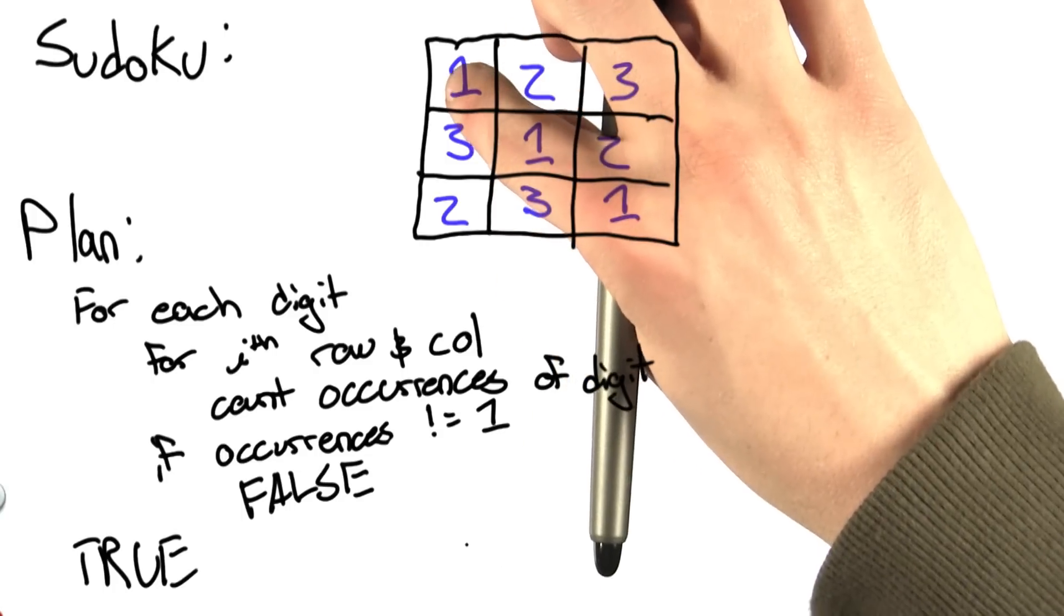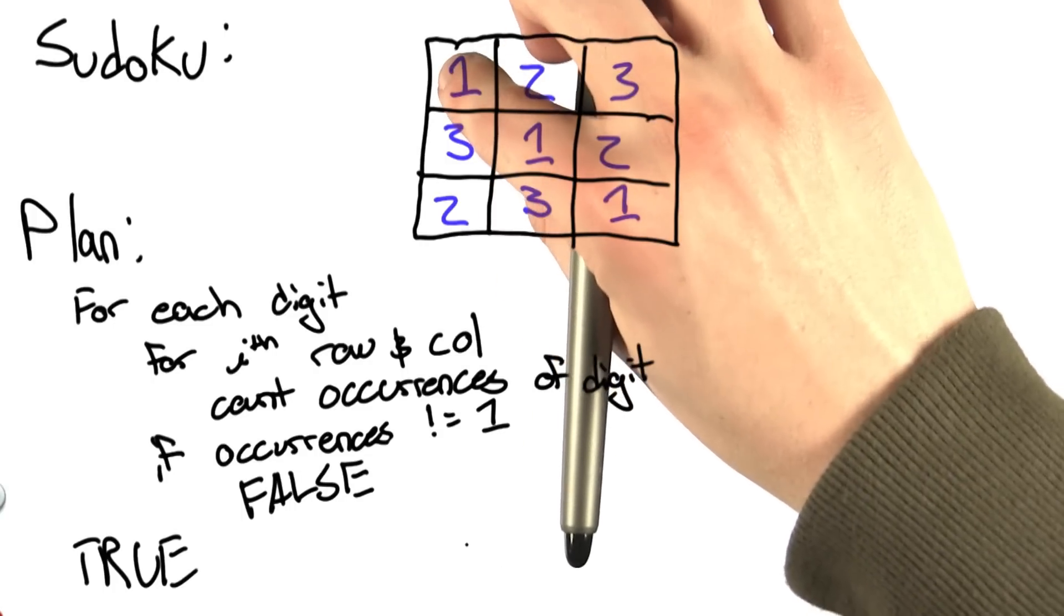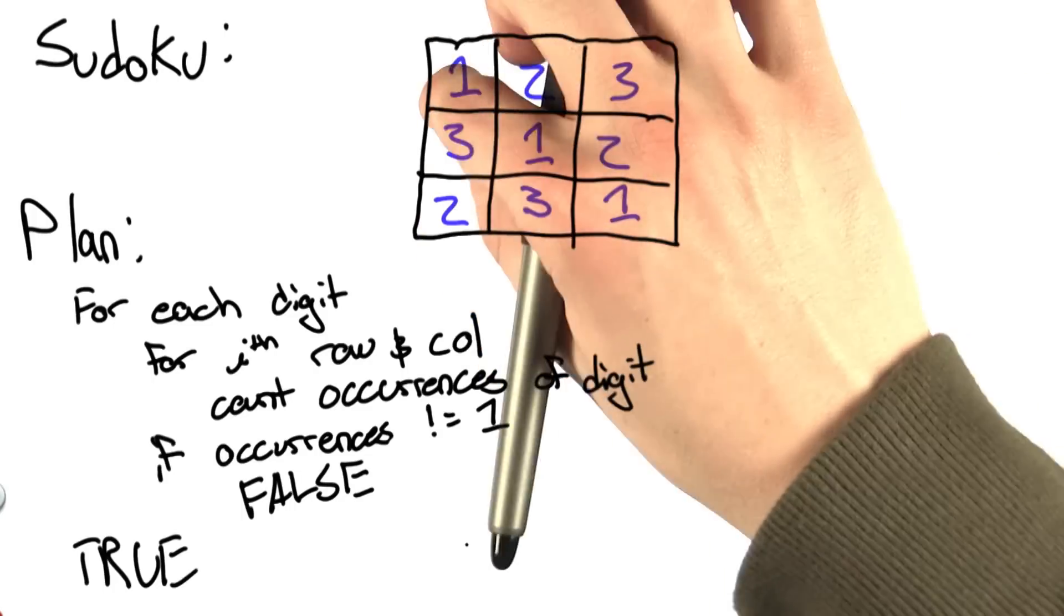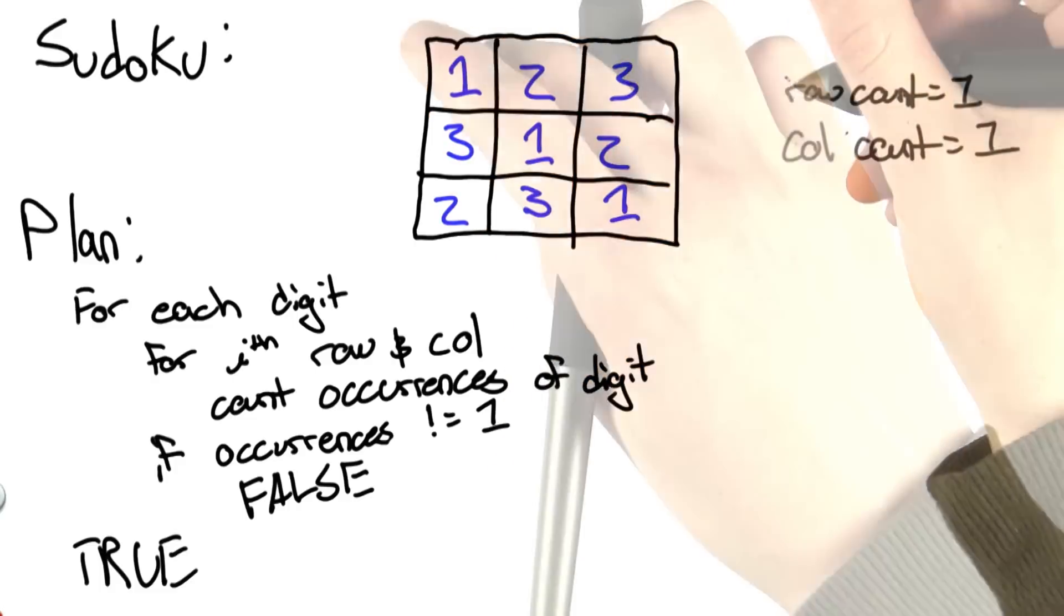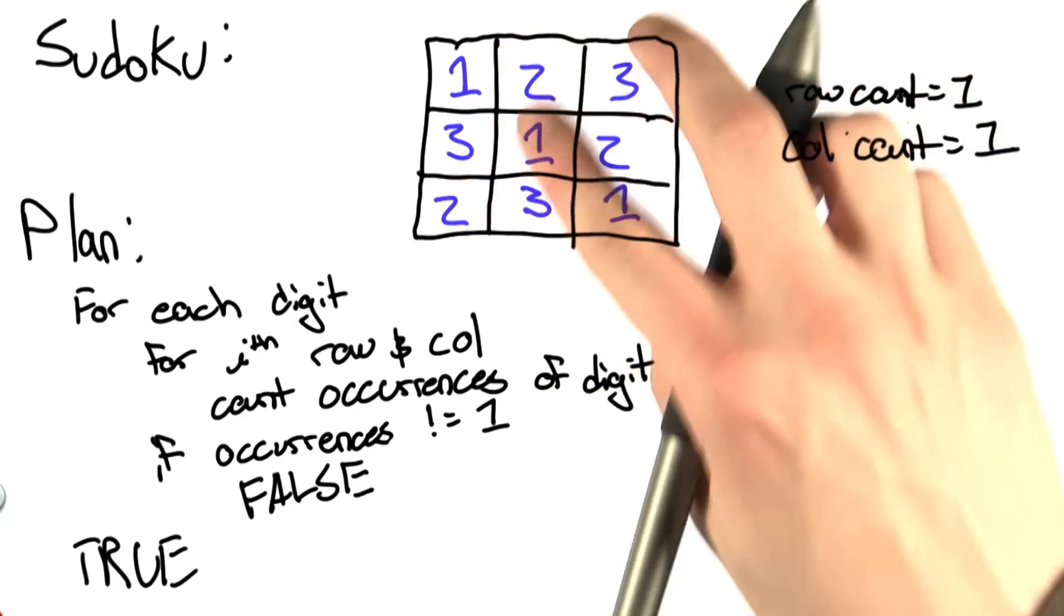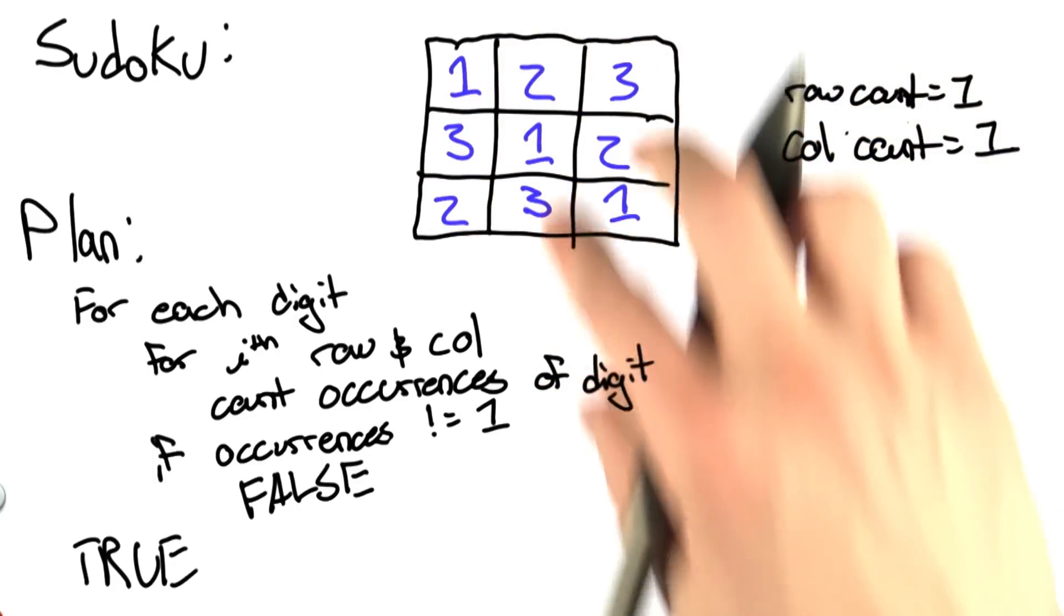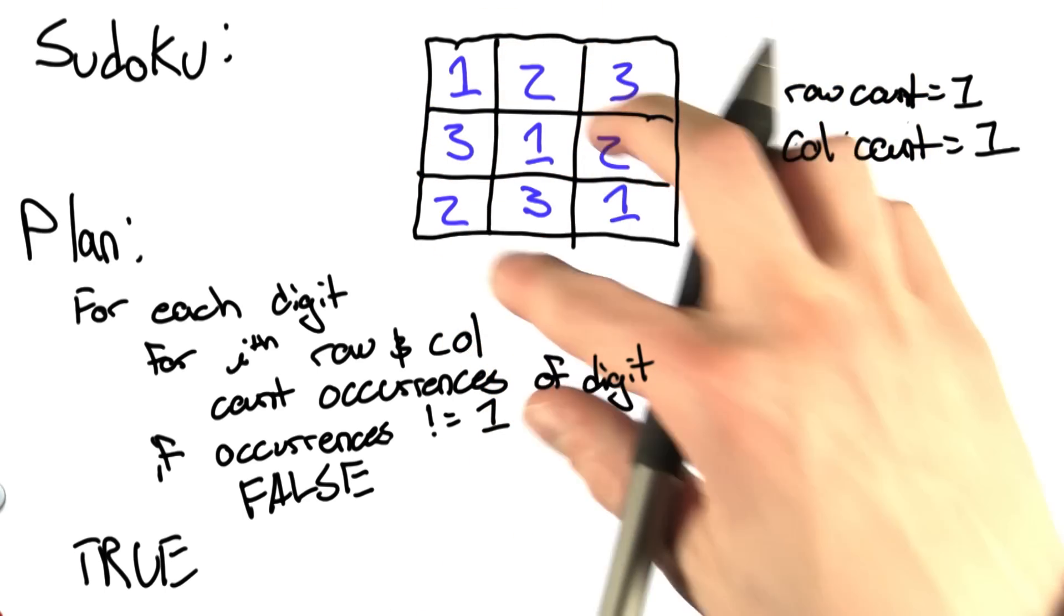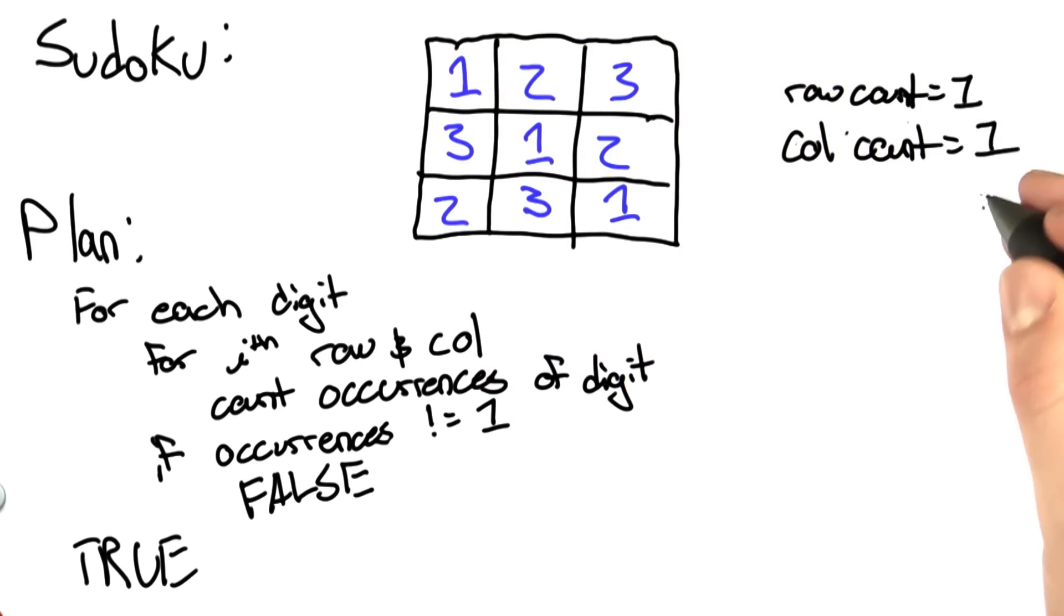So here, we see 1 appears once in the first row and the first column, so we increment our counts by 1. Then we check the second entry in the row and column, and then the third entry. At the end of checking each entry in the row and column, we check our count and ensure that it equals 1 for both.